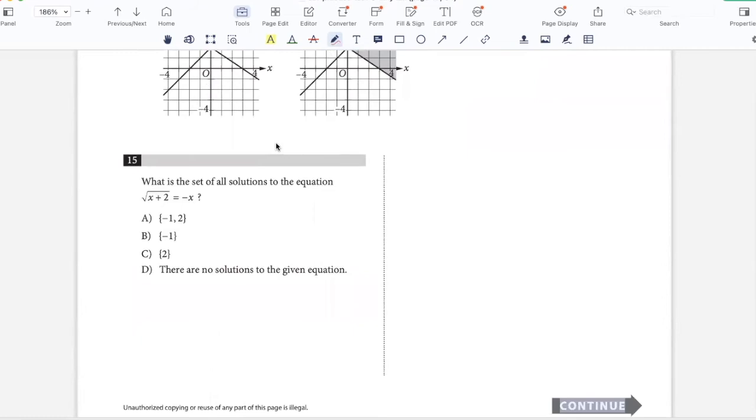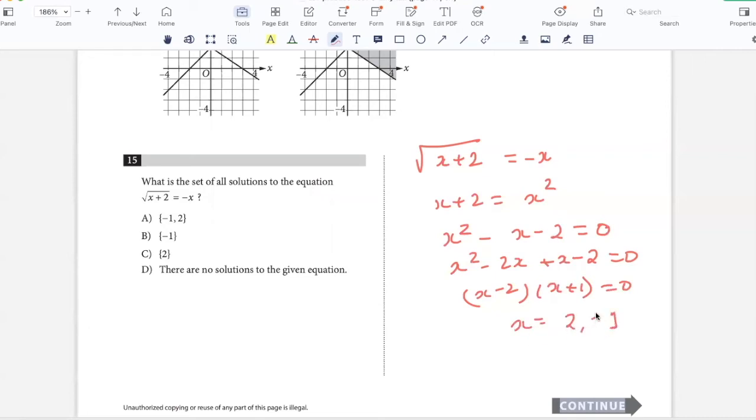What is the set of all solutions to this equation? Square root of X plus 2 equals negative X. If I square both sides, X plus 2 equals X squared. So X squared minus X minus 2 equals 0. X squared minus 2X plus X minus 2 equals 0. So X minus 2 into X plus 1 equals 0. X is 2 or negative 1.